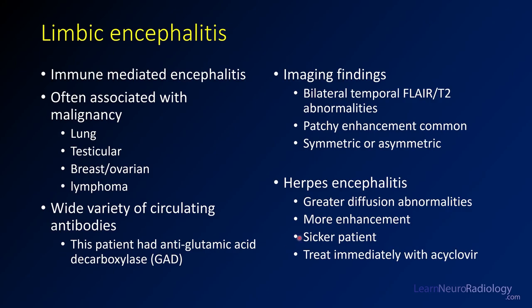The imaging findings you'll see are these bilateral temporal T2 abnormalities, as we saw in this case. You can sometimes have patchy enhancement, but it can be non-enhancing. Oftentimes it will be symmetric, although asymmetric enhancement shouldn't worry you too much. Compared to this case, herpes encephalitis tends to have greater diffusion abnormalities, more enhancement, the patients are sicker, and these patients need to be treated immediately with acyclovir.